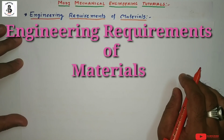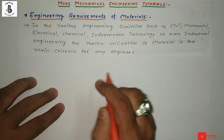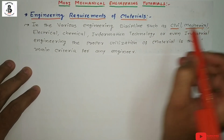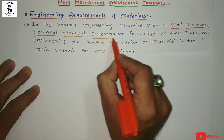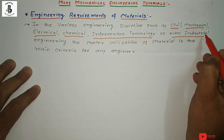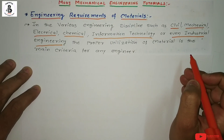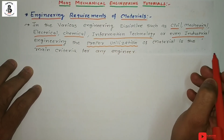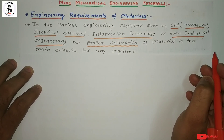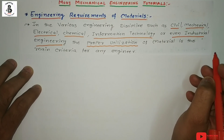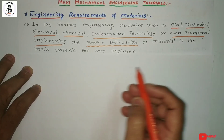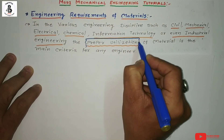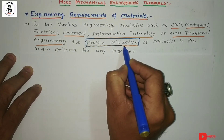We will start with the Engineering Requirements of Materials. In various Engineering disciplines such as Civil Engineering, Mechanical Engineering, Electrical Engineering, Chemical Engineering, Information Technology, and even Industrial Engineering, all engineers need sufficient knowledge for the proper utilization of materials. Proper utilization of selected materials is the main focus area, and that is how we will get maximum output from our products.